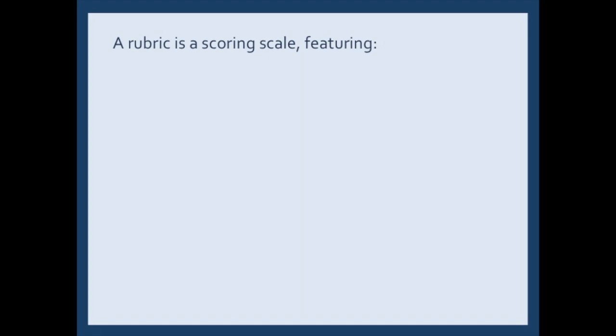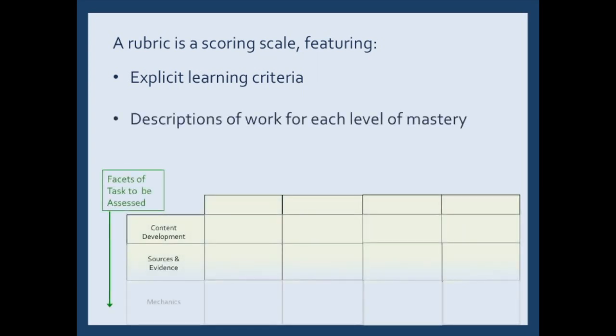So what exactly is a rubric? A rubric is a scoring scale that allows one to assess student performance against explicit learning criteria. An analytic rubric specifies the aspects of learning that are being assessed.